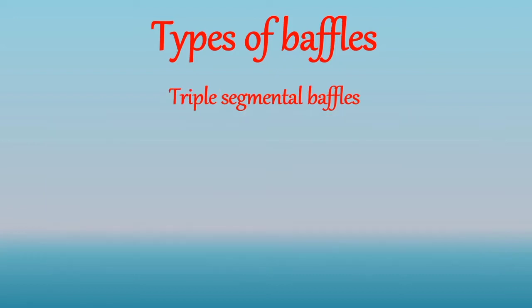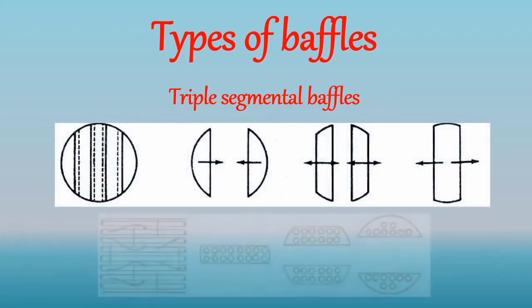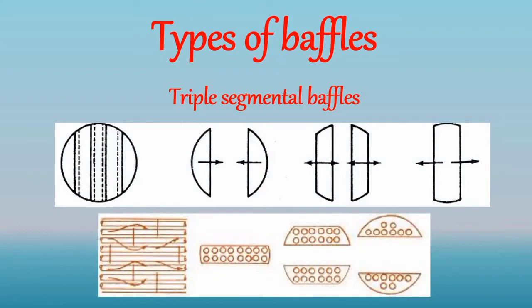In the triple segmental baffle, the baffle plate is cut in such a way that we get three parts: one center baffle and two split baffles. In triple segmental baffles, all the tubes are supported by all the baffles, which provides low pressure drops and minimum tube vibration.